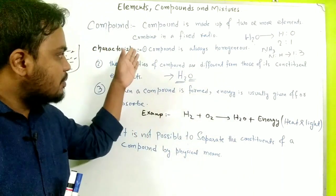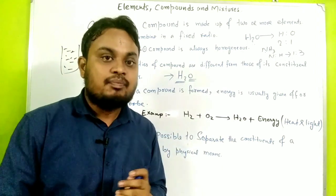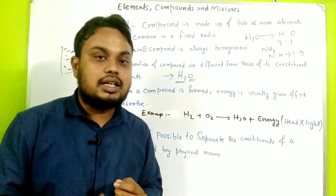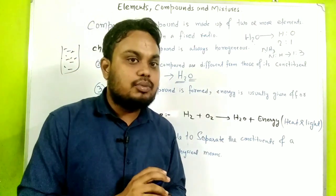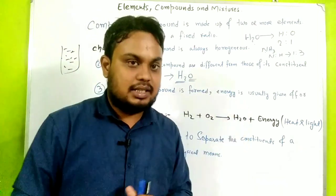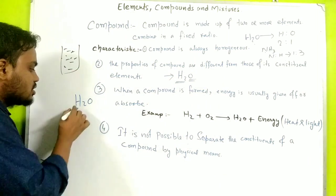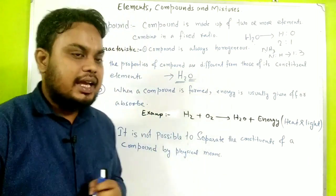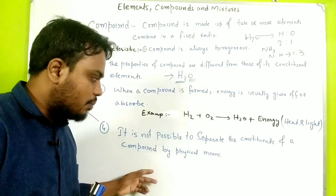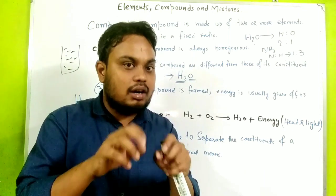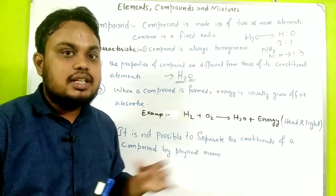The last characteristic of a compound is that it is not possible to separate the constituents of a compound by physical means or ordinary physical properties. For example, you cannot separate hydrogen and oxygen from water by physical means — only chemical reactions can separate them.